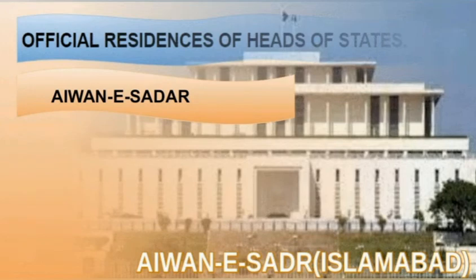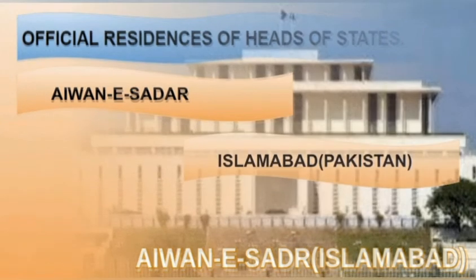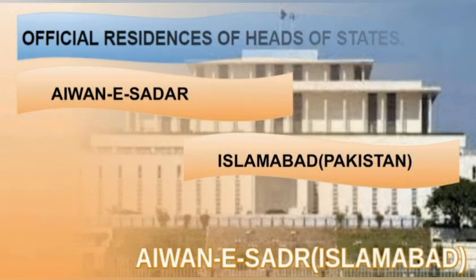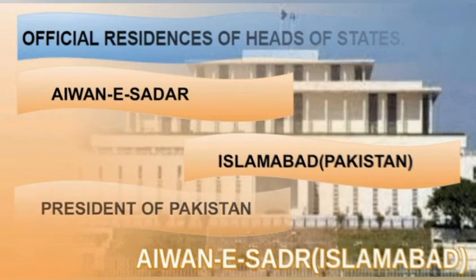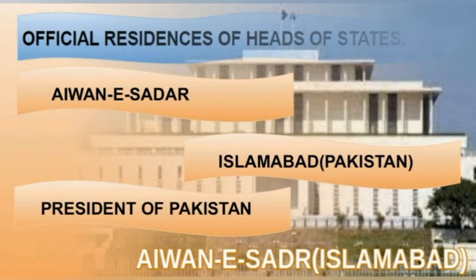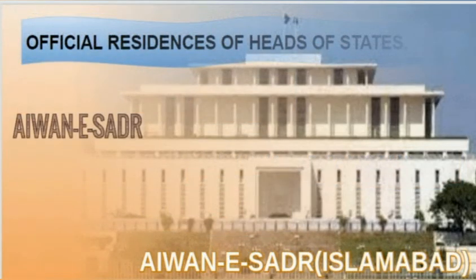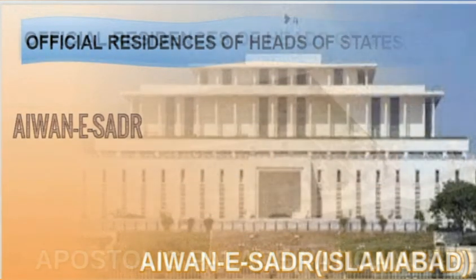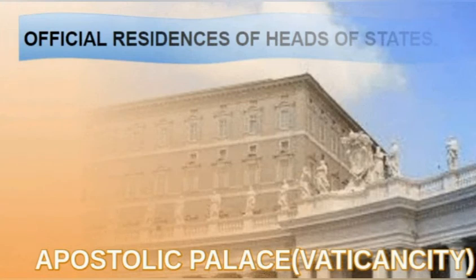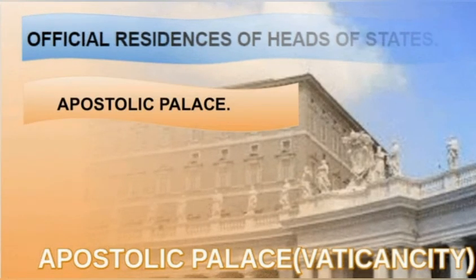Coming to the next one, Aiwan-e-Sadr. It is situated in Islamabad, Pakistan, and it is the official residence of the President of Pakistan.